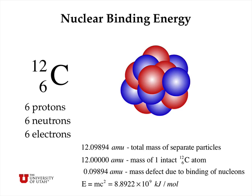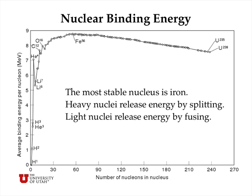Einstein tells us that the energy equivalent of mass is calculated by E equals mc squared. The amount of energy released when the nucleus gets bound together in carbon-12 is 8.9 times 10 to the 9th kilojoules per mole. This is about 20 million times larger than chemical bond energy, so it's absolutely enormous.